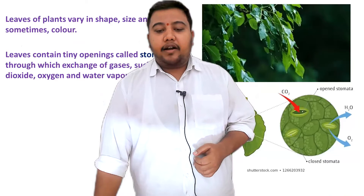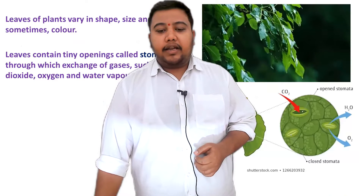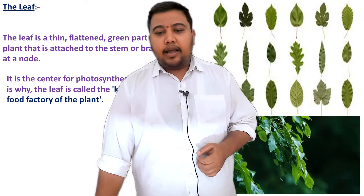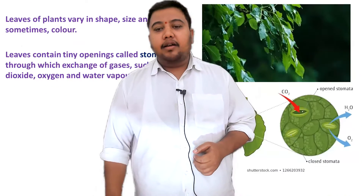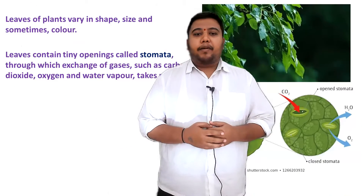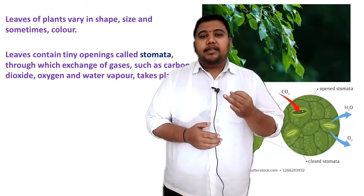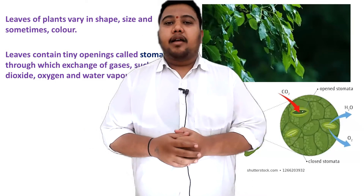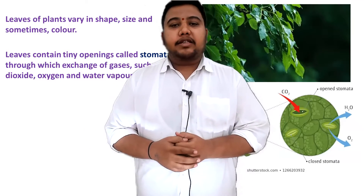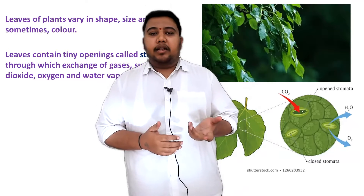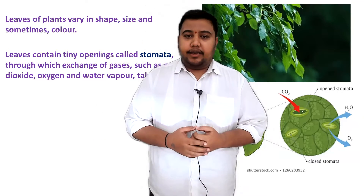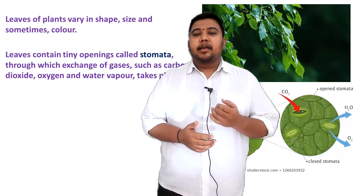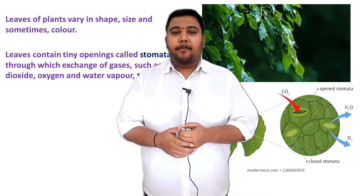Leaves of the plants vary in shape, size, and sometimes in colour also. Mostly the leaves of plants are green in colour, but sometimes they can be red or yellow in colour in a few plants.